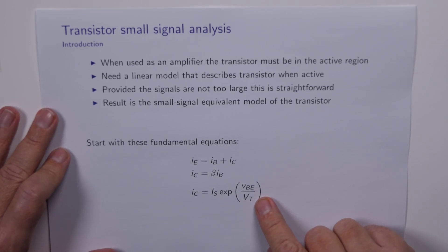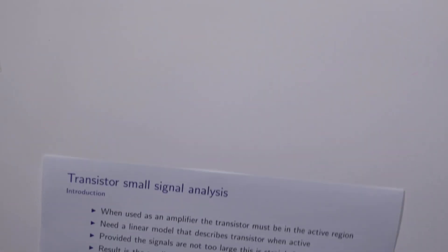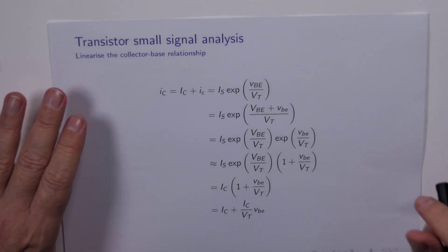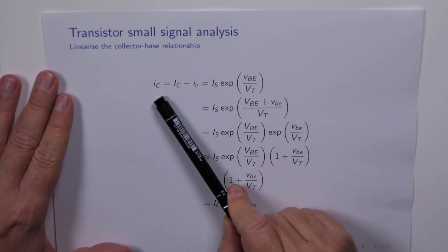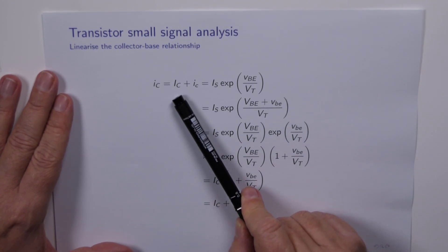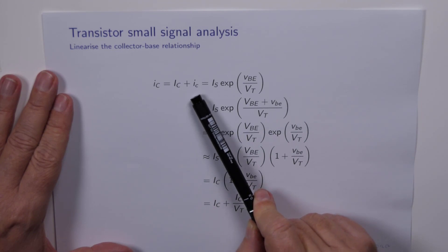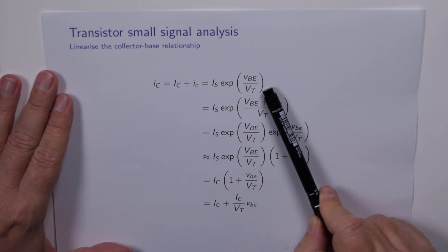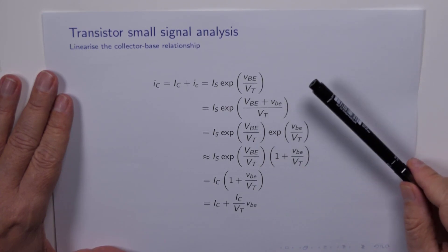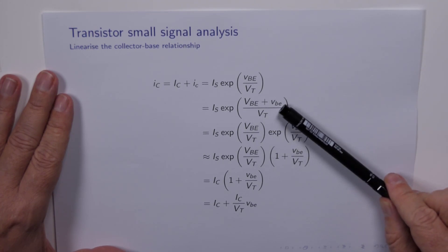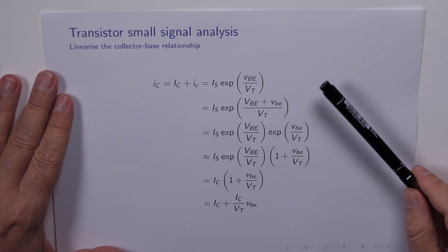Let's see how we might do that. So let's take a closer look at this equation. On the left hand side we've got the total collector current, which is equal to the DC collector current plus the AC collector current, and that's equal to the equation on the previous page. Now we'll split VBE up into its two components, the DC part and the AC part, and we'll see where that goes.